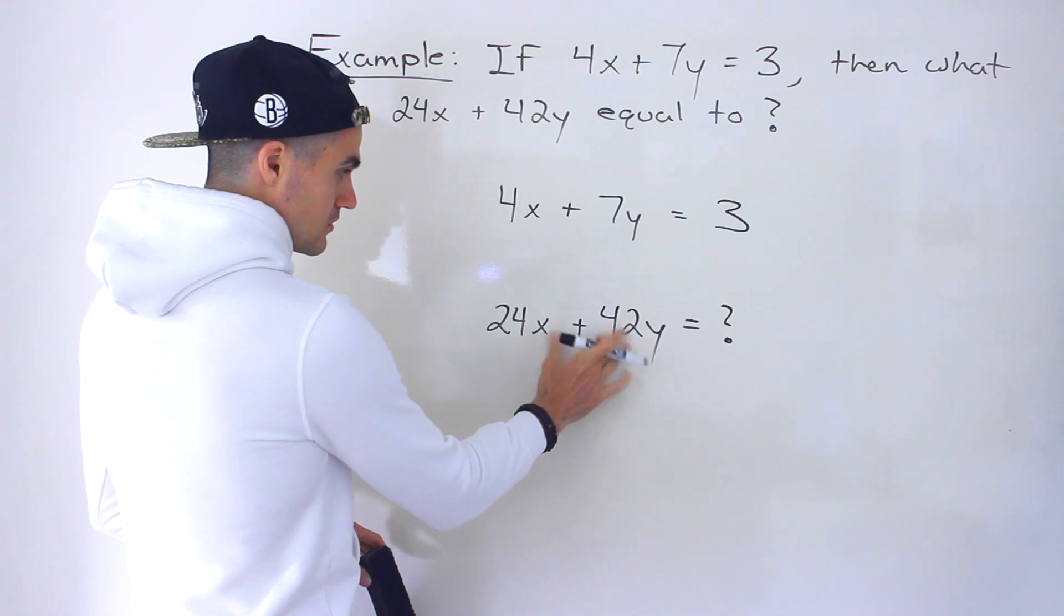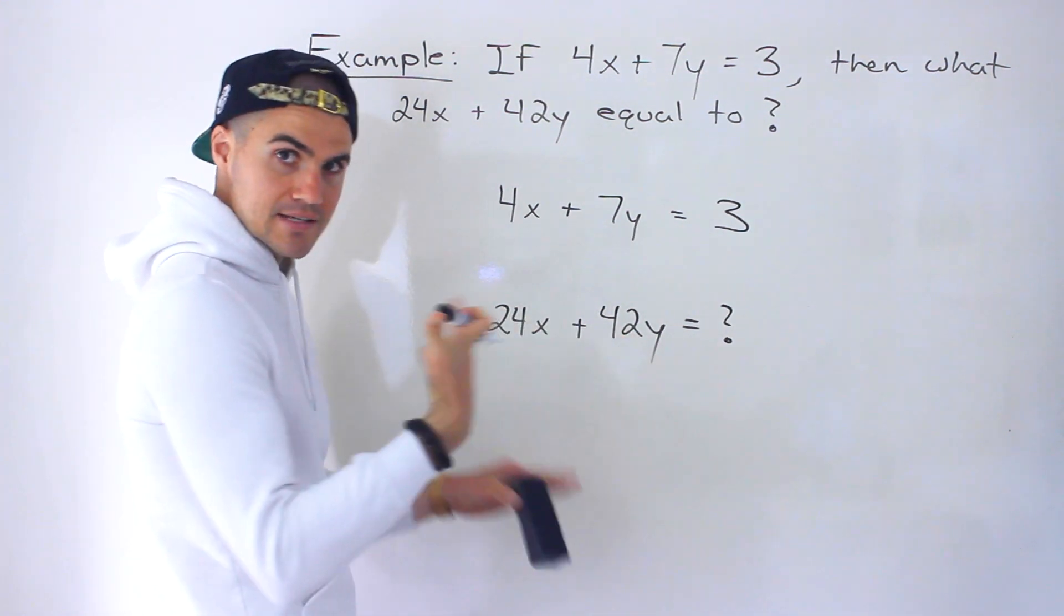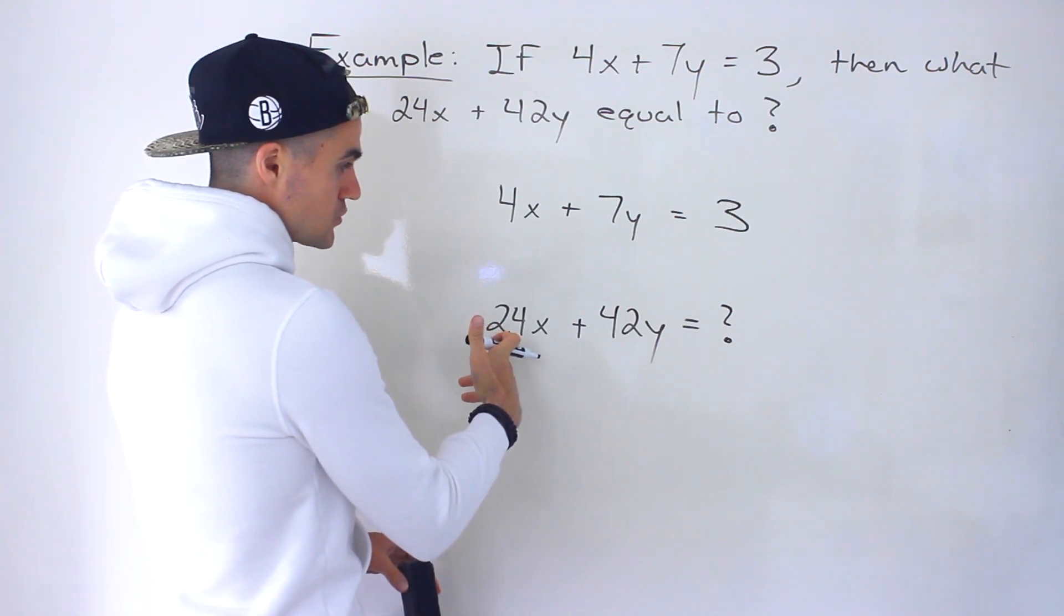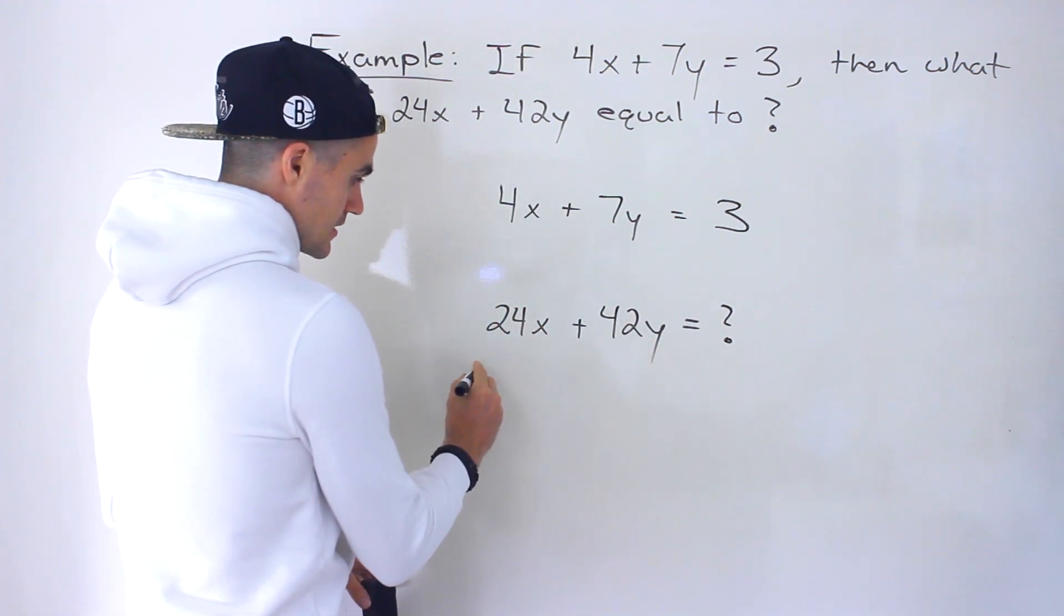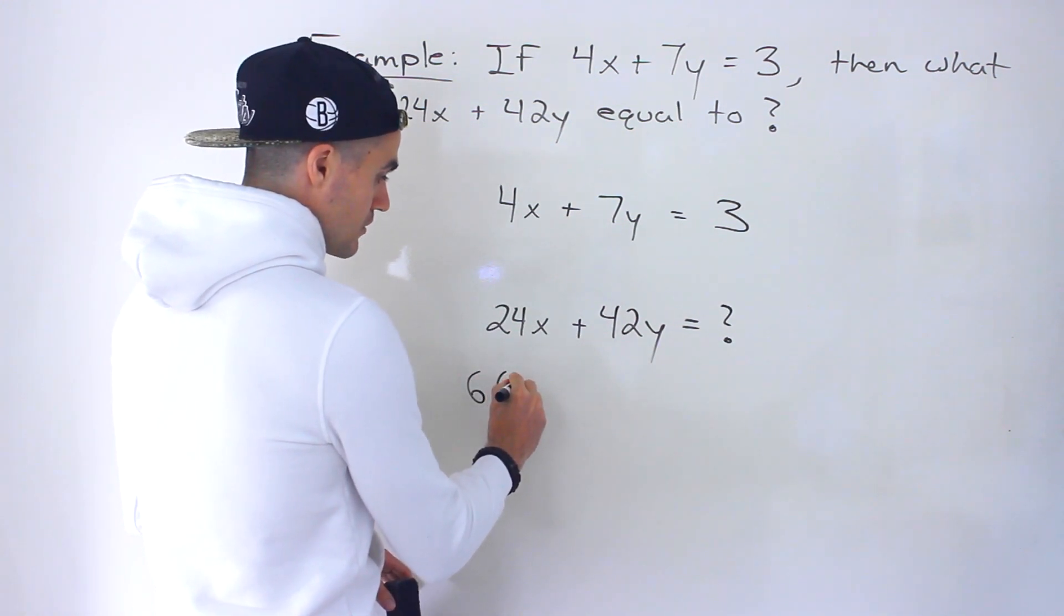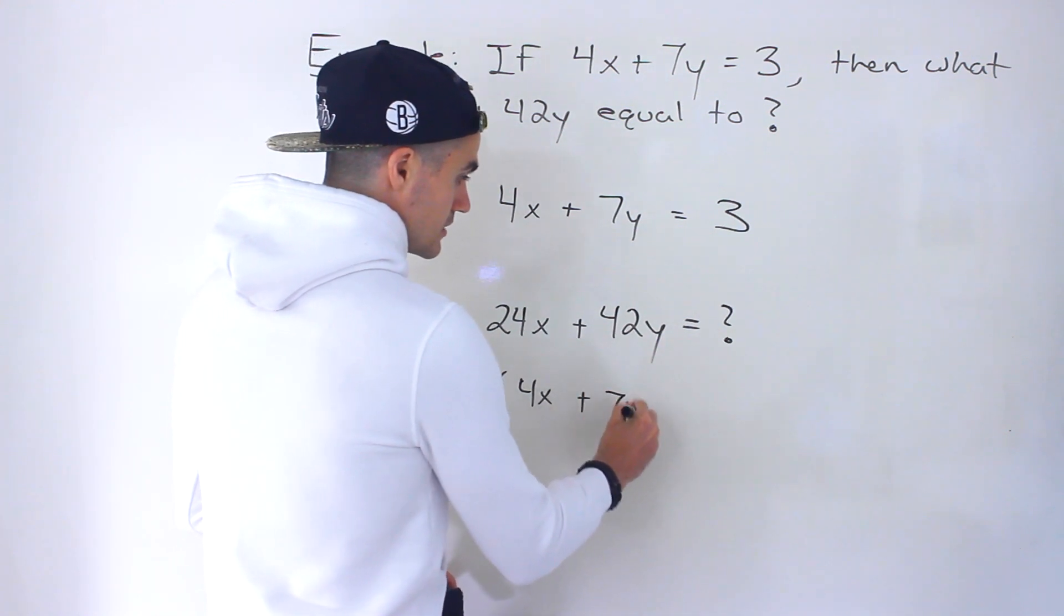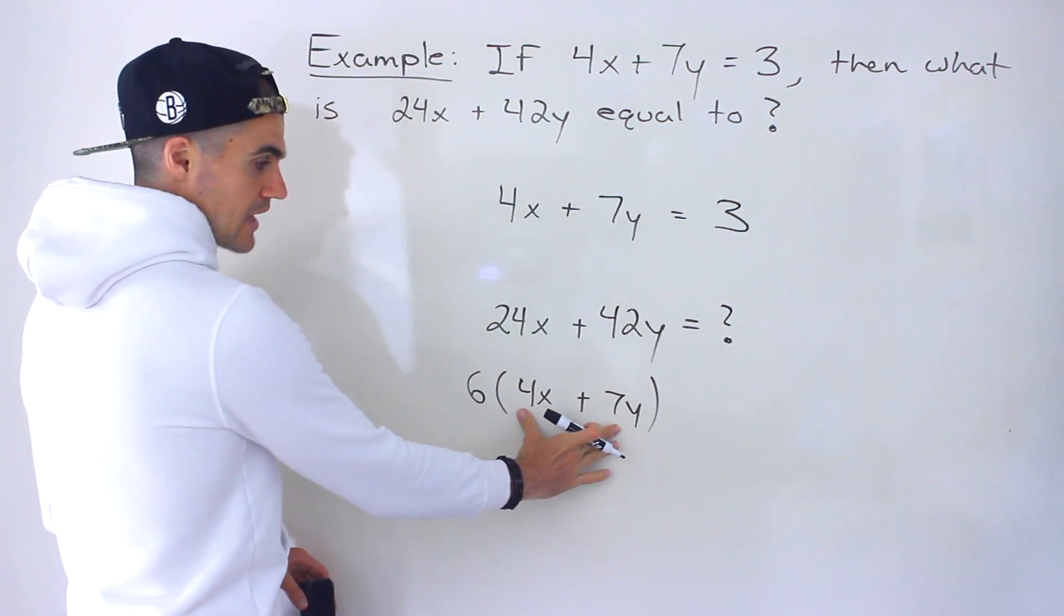So if we factor 24x plus 42y, notice between the x and y, we can take out a variable. But between 24 and 42, what's a common factor? Well, notice that it's 6. So we could take out a 6, and what would we be left with? We'd be left with 4x plus 7y, right? If we divide this by 6, divide this by 6, we end up with that.